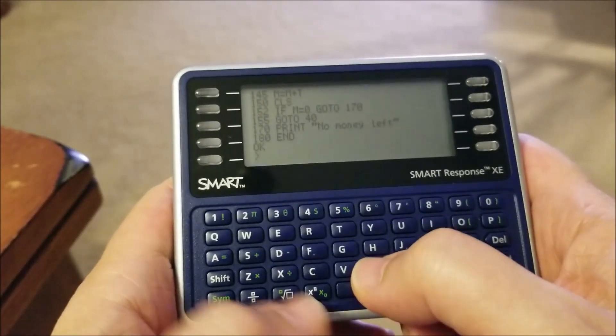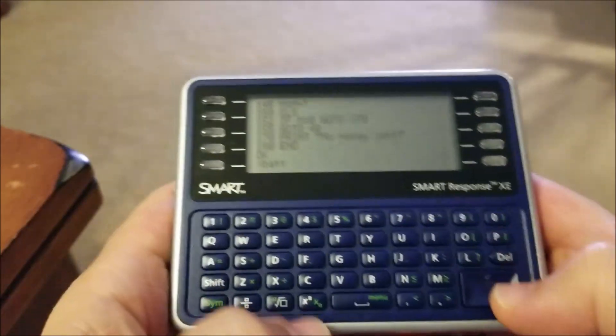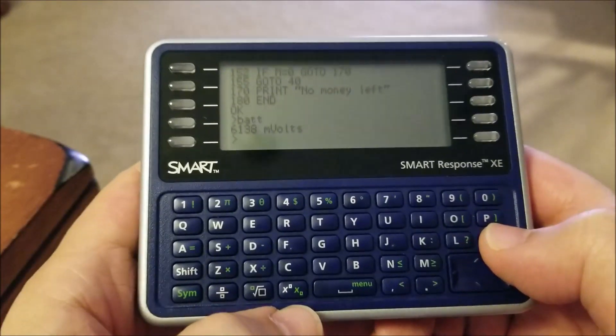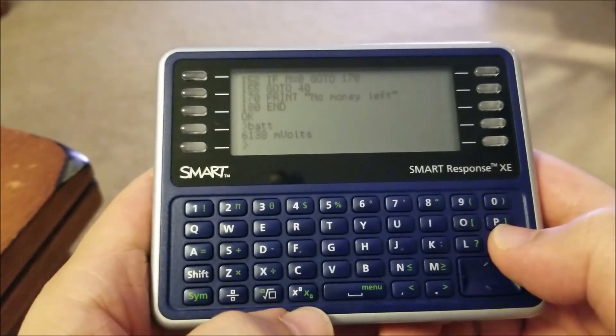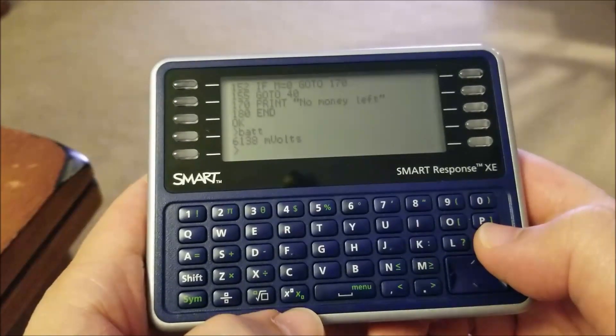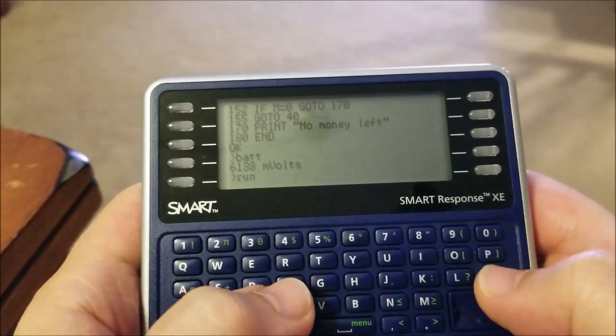One of the other commands that you can do from the command prompt is battery. If you do B-A-T-T and you hit return, it'll give you the battery voltage in millivolts. So I got about 6.1 volts—I got a pretty fresh pack of batteries, so that's what you'd expect to see.